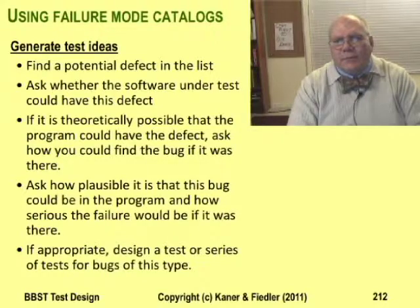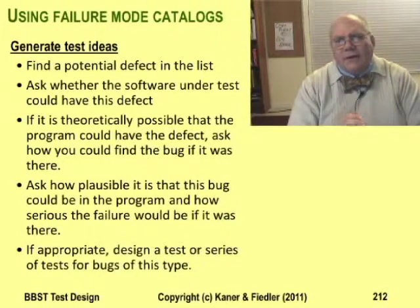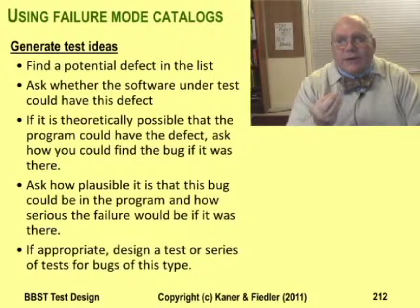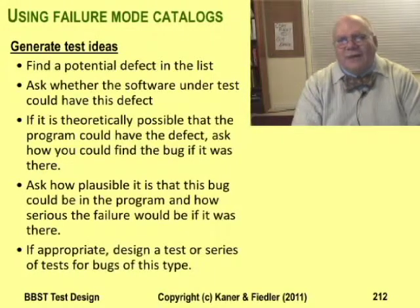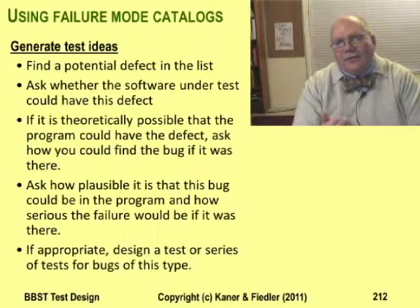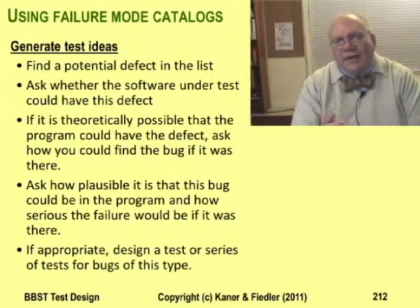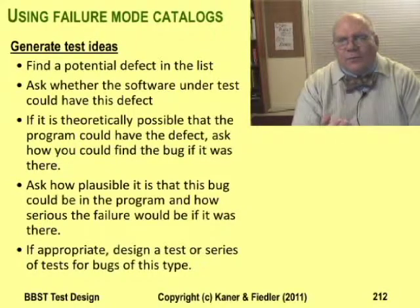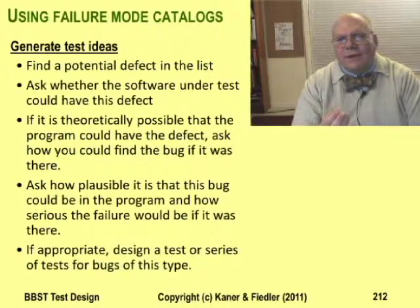The first use was having a ready collection of test ideas. Sometimes when testing, you find yourself doing repetitive, uncreative things. A bug catalog helps break out of that rut. You can skim the catalog for a potential failure that seems interesting, then figure out whether the program could fail that way and how to make it fail that way. That led to a lot of bugs that wouldn't have been found any other way.